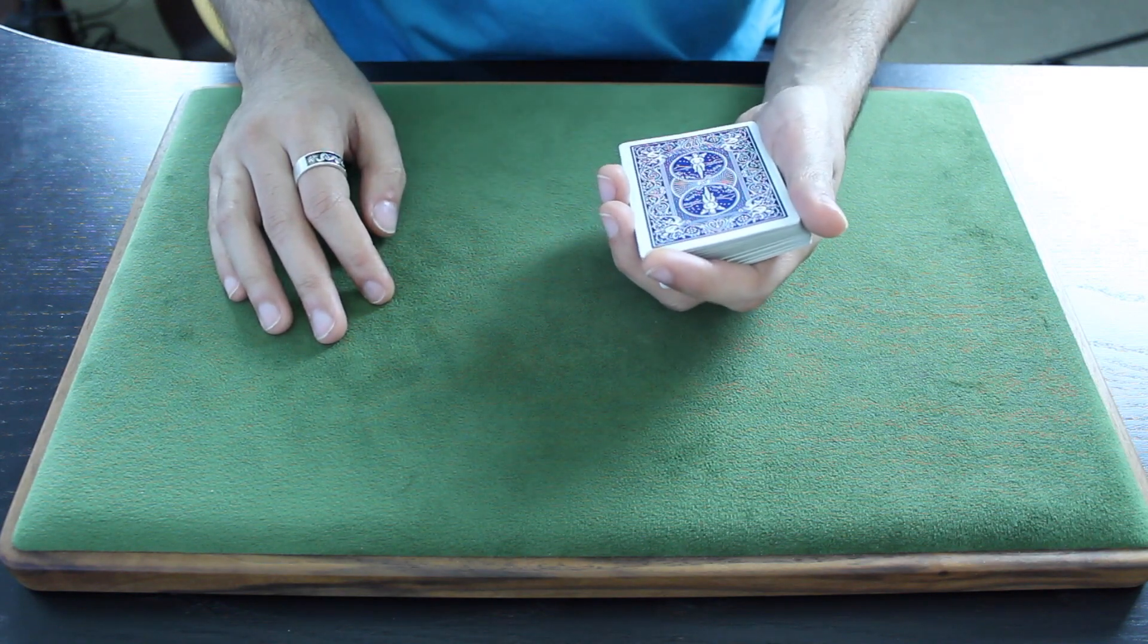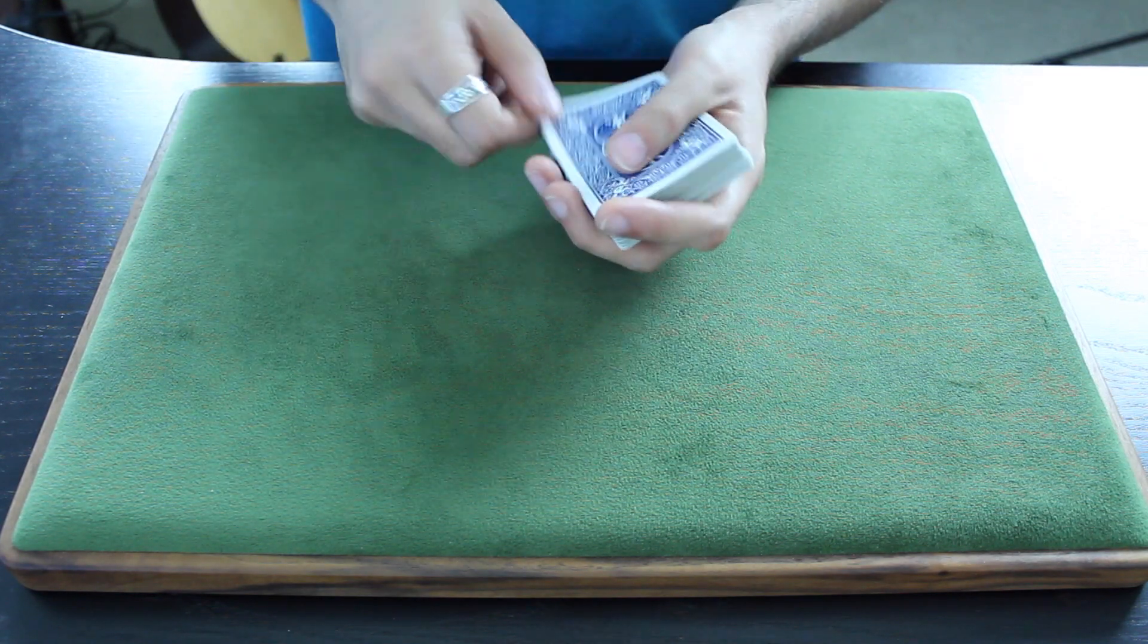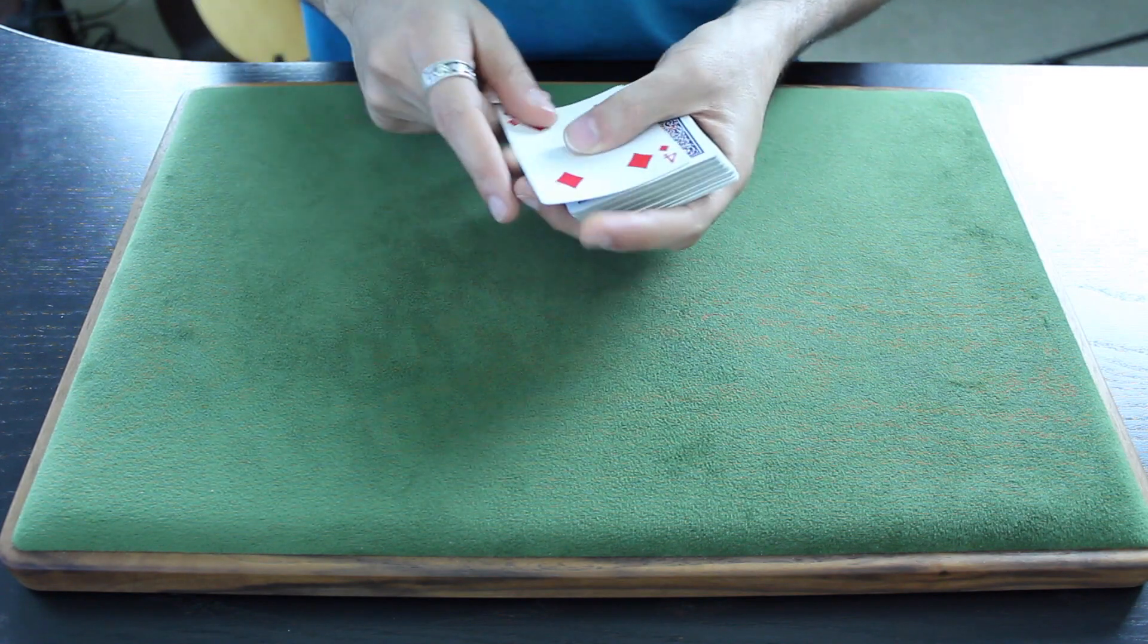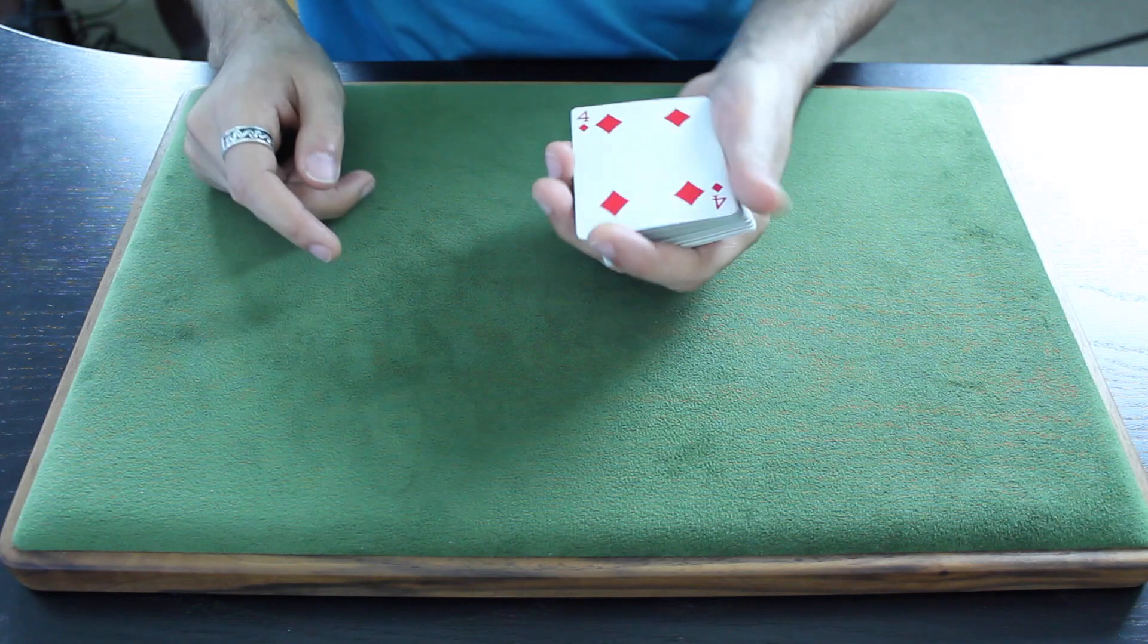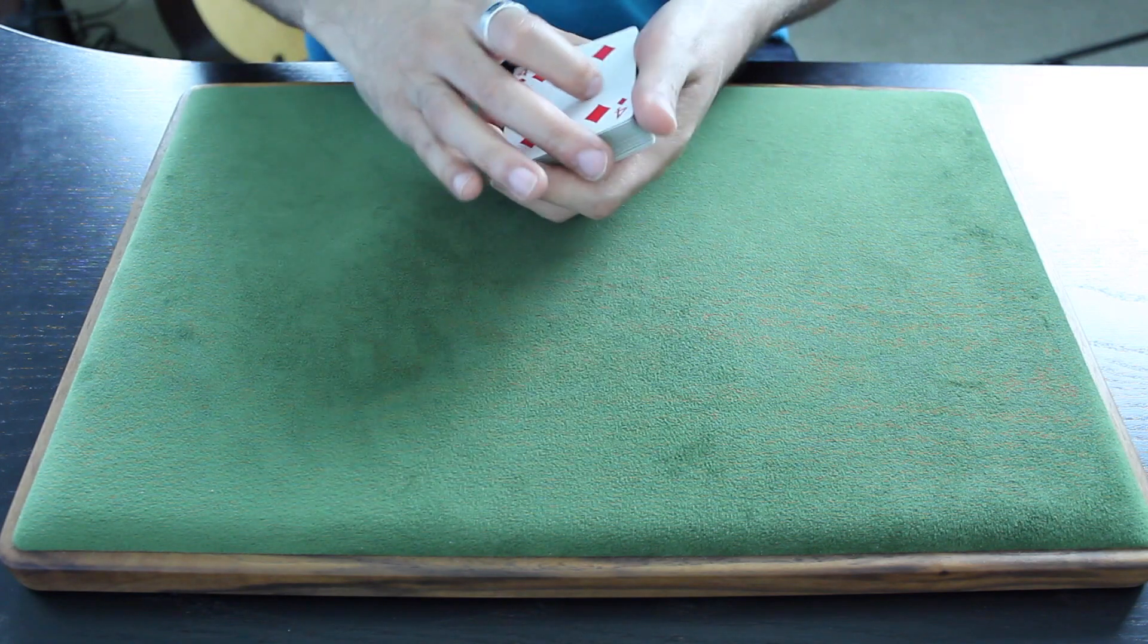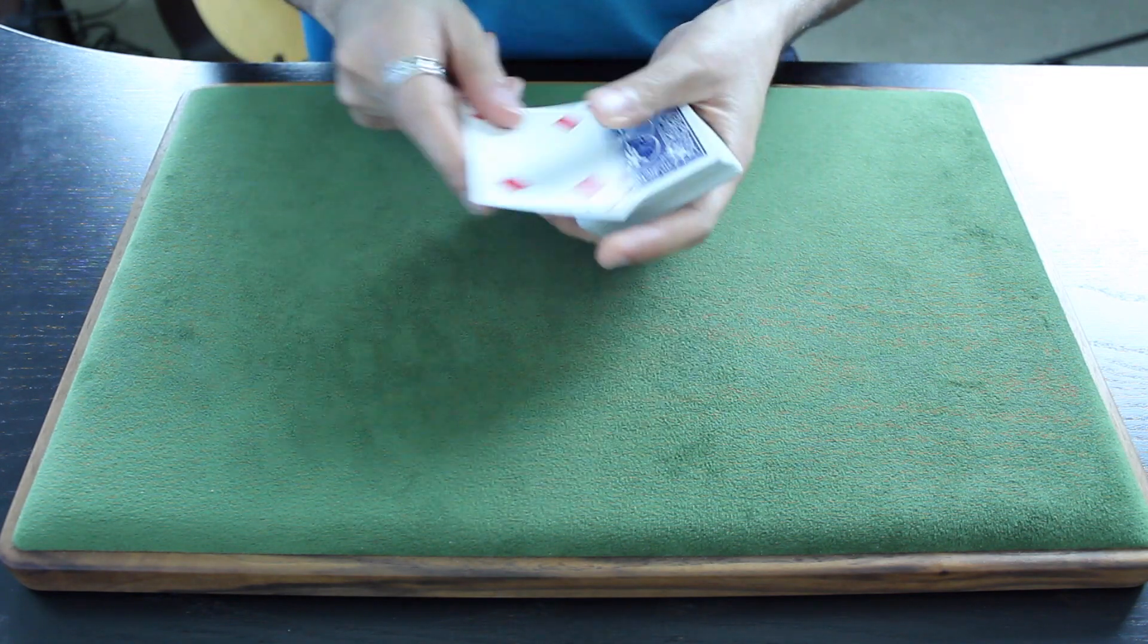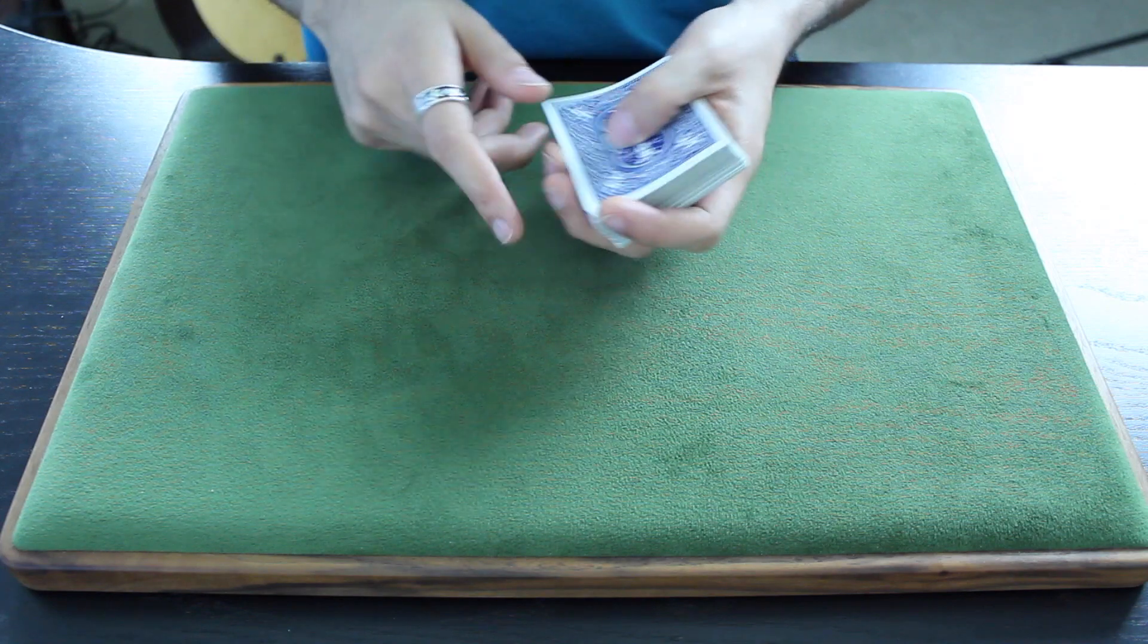One of the questions that I get from time to time is when doing a double lift, what do you do if somebody calls you out and notices that you're holding two cards instead of one? The KM move can be used to recover from that situation. Let me give you an example of what that would look like.